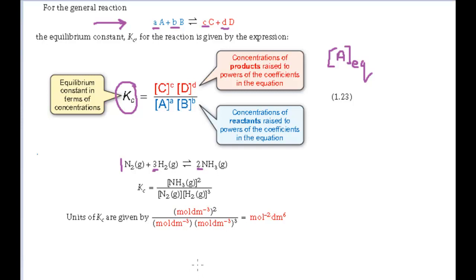The units of Kc depend on the particular reaction. Concentrations are usually given in moles per decimetre cubed. For the ammonia formation reaction, you can work out the units as shown here. The concentration of ammonia on the top line is squared, so the units on the top line are moles per decimetre cubed, squared. On the bottom line: concentration of nitrogen — moles per decimetre cubed — multiplied by concentration of hydrogen — moles per decimetre cubed — to the power 3.